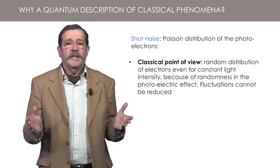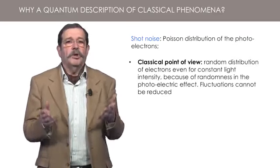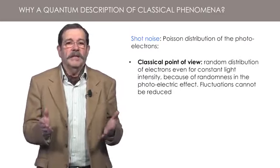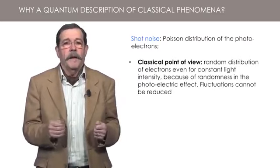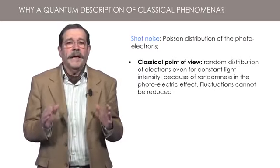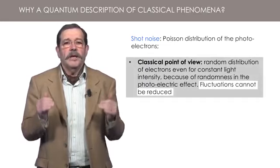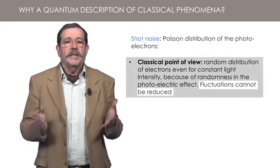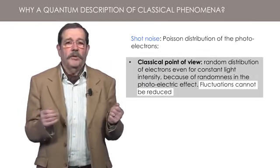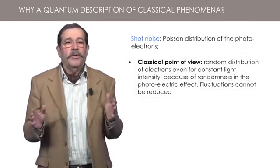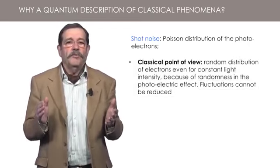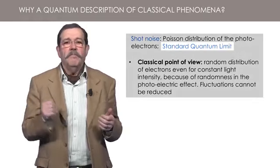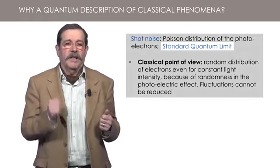As a matter of fact, a constant probability of photoemission per unit time leads to a Poisson distribution of photoelectrons in a given interval of time. In this point of view, one cannot do better than using a perfectly constant light intensity, since any fluctuations in the intensity would entail additional fluctuations. Although this limit is classical from the point of view of optics, it is called the standard quantum limit because of the quantum character of the photoelectric effect.